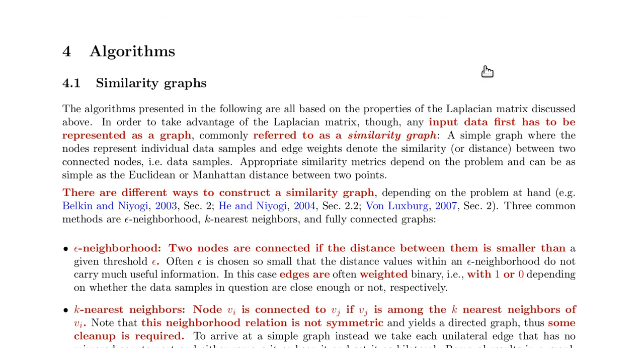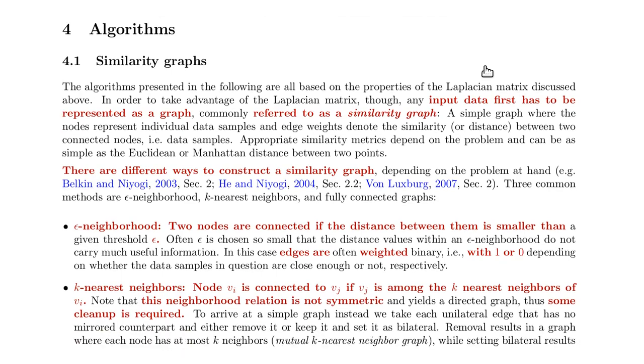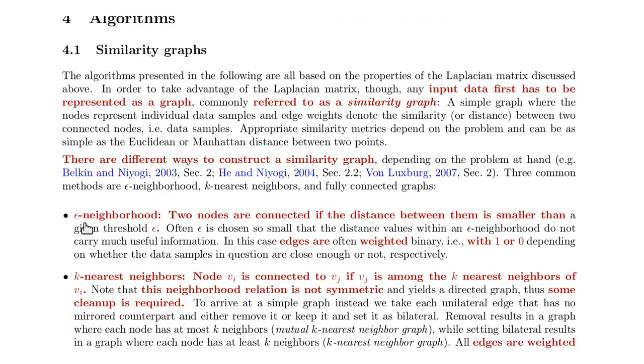I want to discuss three typical ways of constructing a graph. One is the epsilon-neighborhood graph. There you would first introduce a node for each sample that you have. If you have 1,000 samples, text samples or something, then you introduce 1,000 nodes. So the number of nodes equals the number of samples.